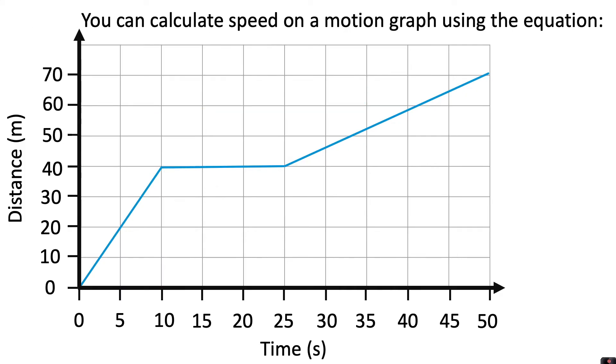In the second part of the graph we said it was a slower constant speed because it's a shallower line. So the rhino goes from 40 meters to 70 meters in this section, so that's a total distance of 30 meters, and he does that between 25 and 50 seconds. So that is a total time of 25 seconds.